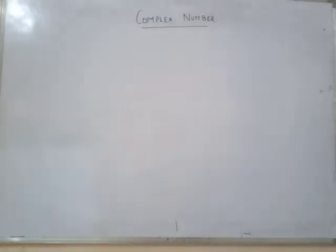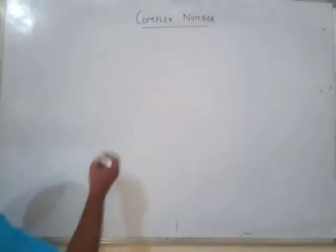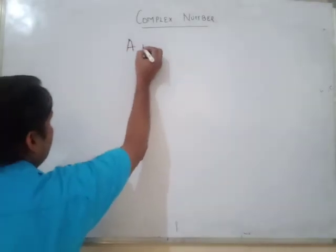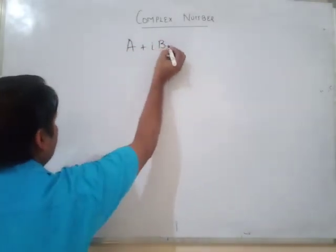Good morning students. Today we are going to do exercise 5.1 on complex numbers. But while doing this, first of all you should know what is a complex number. Any number which is of the form A plus iota B is called a complex number.